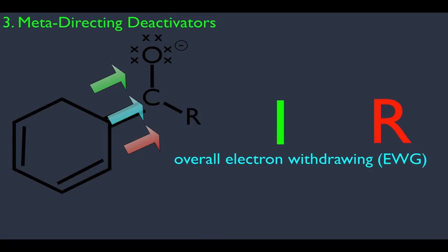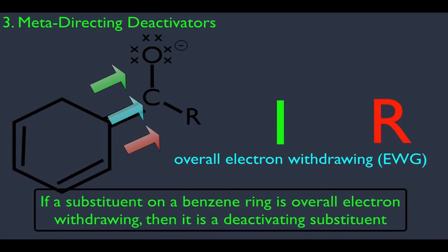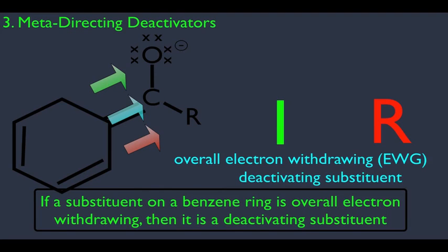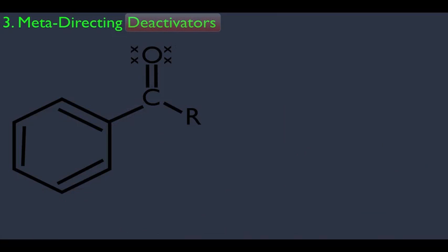We learned in the previous lecture that if a substituent on a benzene ring is overall electron withdrawing, then it is a deactivating substituent. So that explains why these substituents are deactivators. Remember, this means it doesn't make the benzene ring unreactive — just simply less reactive compared to pure benzene.